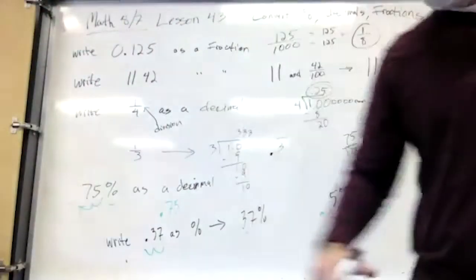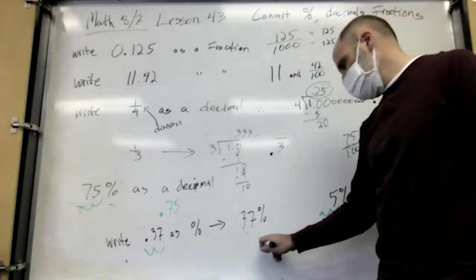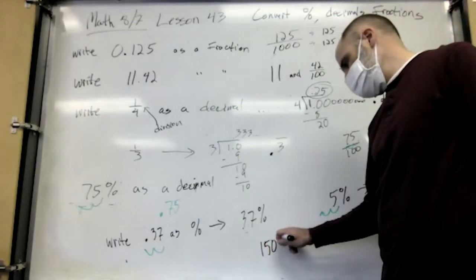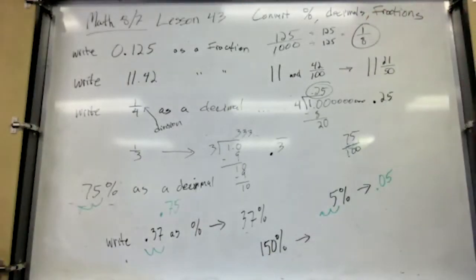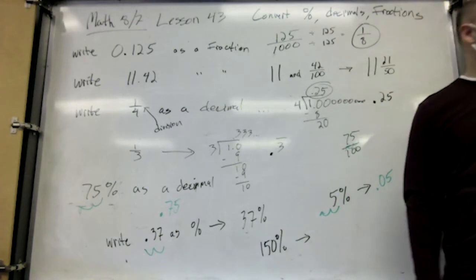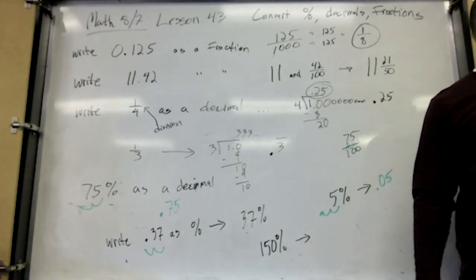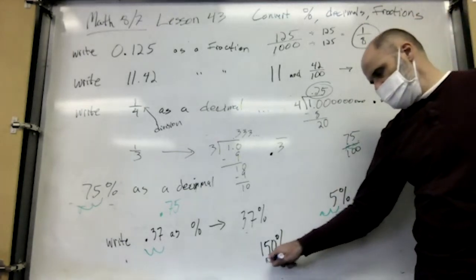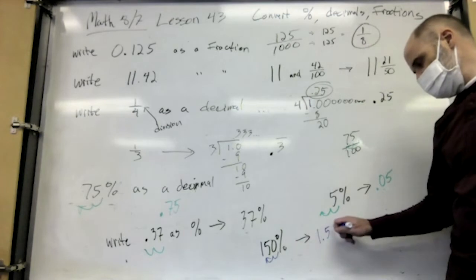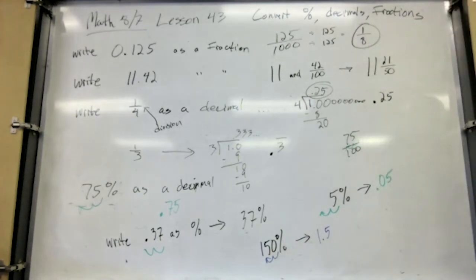One more tricky one — what's 150% as a decimal? 1.5. Or 1.50, but you can drop the zero if it's at the end of a decimal. We're just moving the decimal two places — either left or right, depending on which way you're going.